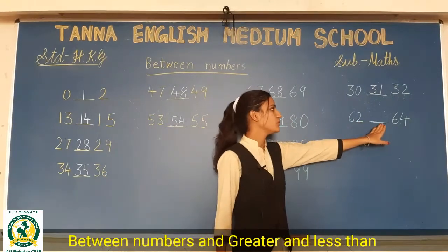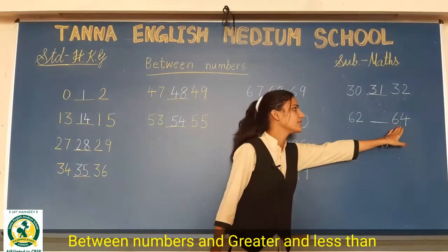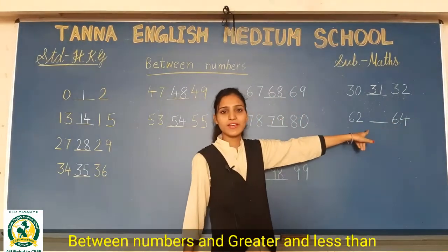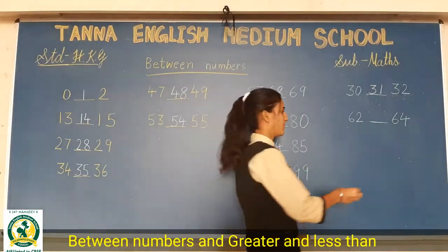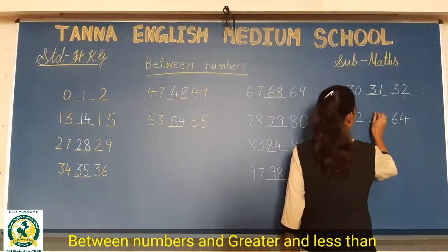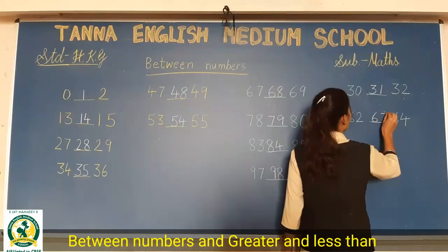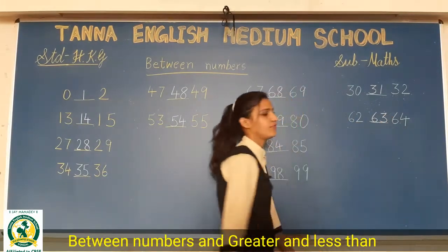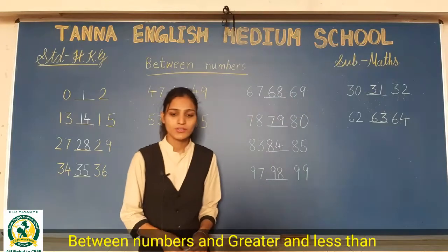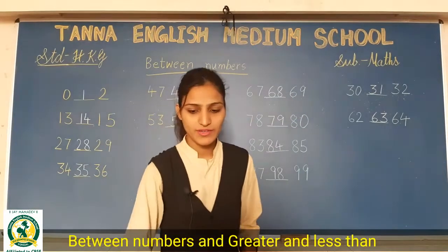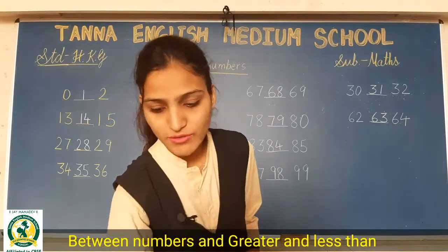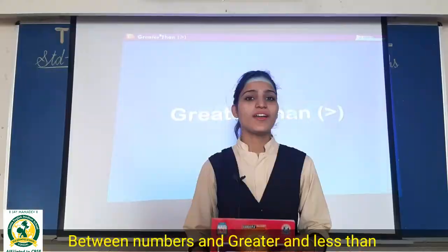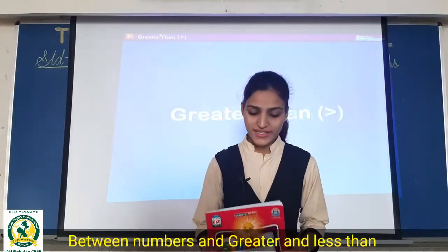Phir last dekho 62 dash 64. What comes in between? Very good. 63. 62, 63 and 64. Done. Toh, yeh aapko between numbers CW and HW mein complete karne hain. Ok, students?